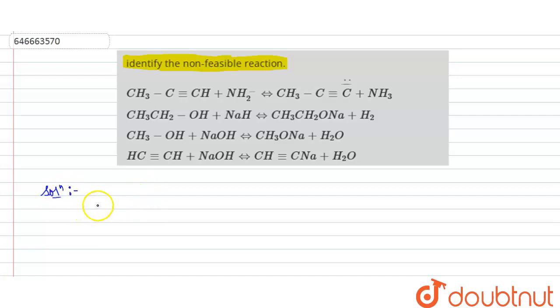If we talk of the first reaction, if we write here, we are given with acetylene as the reactant. That is CH3 single bond C triple bond CH, and it is reacting with NH2 minus. Then on the product side, we have CH3 C triple bond C 3 minus plus NH3.